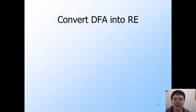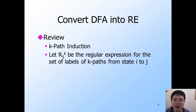We will now start to discuss the conversion from a DFA into a regular expression. Firstly, let's have a review. In the conversion, we introduce the notion of k-path induction, where R_ij^k is the regular expression for the set of labels of k-paths from state i to state j. This means that, starting from i, if the DFA receives any string from R_ij^k, it will go to state j and will not pass any node with label greater than k. And R_ij^k describes all such strings.